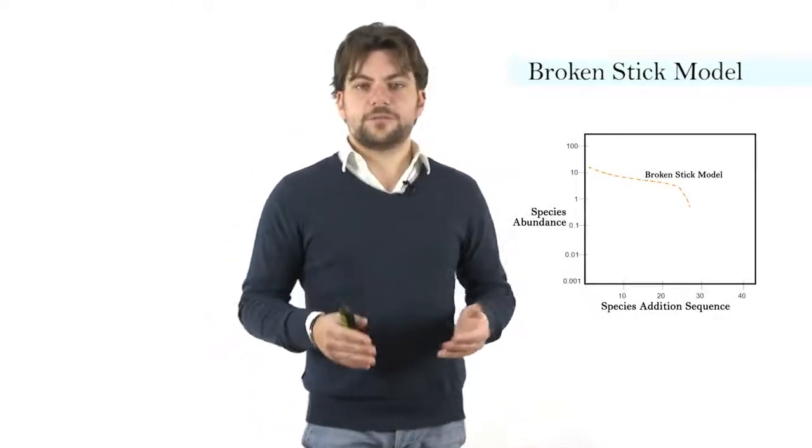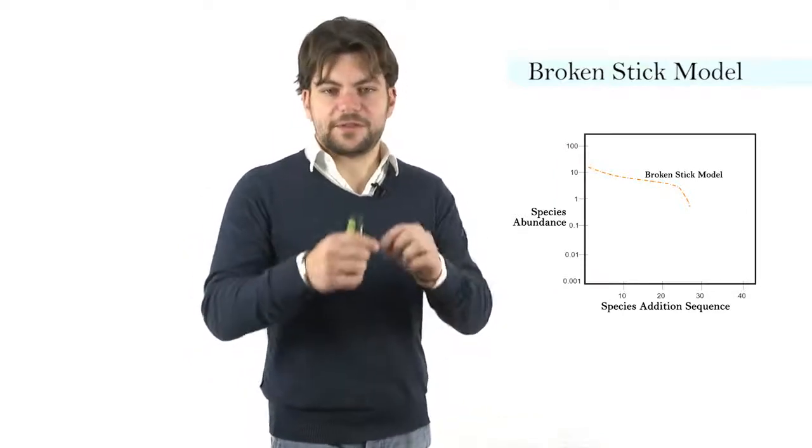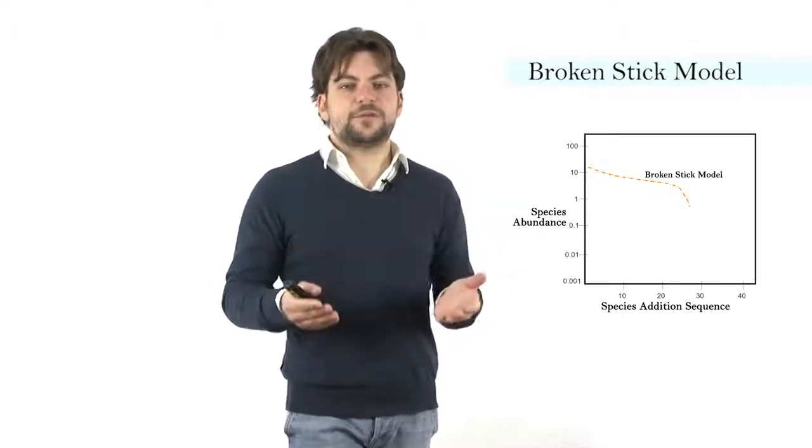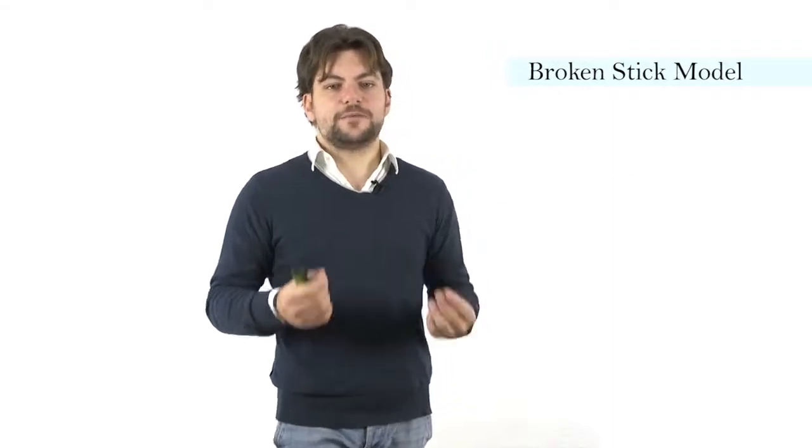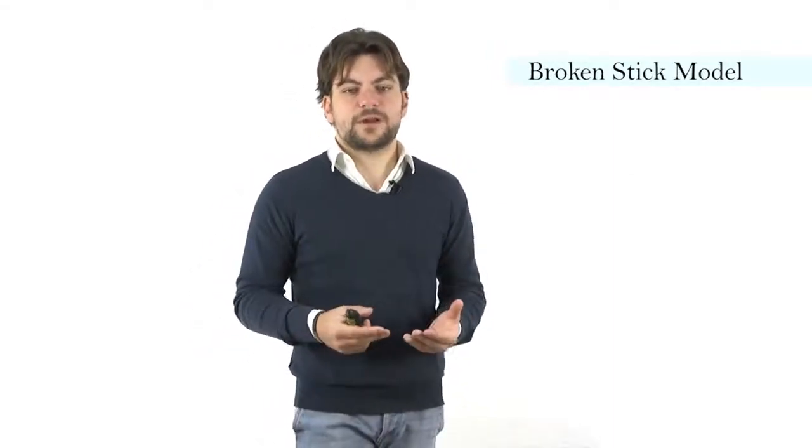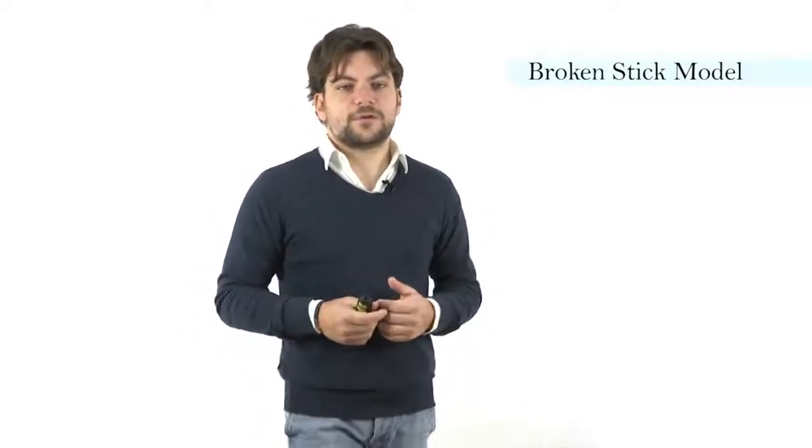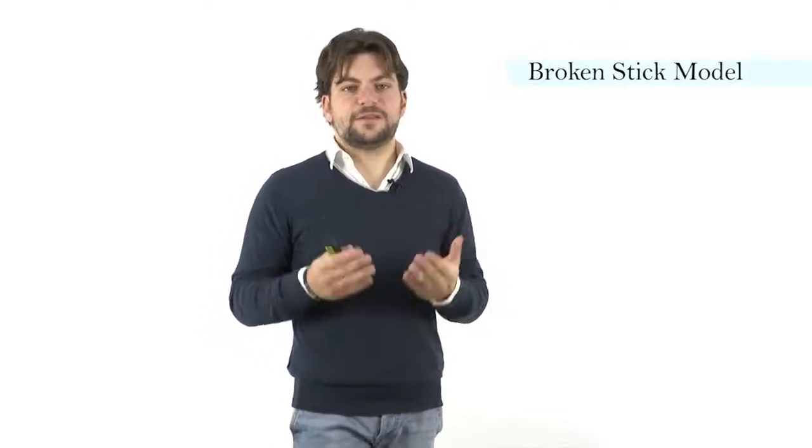The last model is the broken stick model. Sometimes it is called random niche boundary hypothesis, because the broken stick means that you have a stick that is broken in small pieces, randomly and simultaneously broken, without any real relationship between early species present and niche sites of subsequent arrival. It is unlike all earlier models, completely different from them.